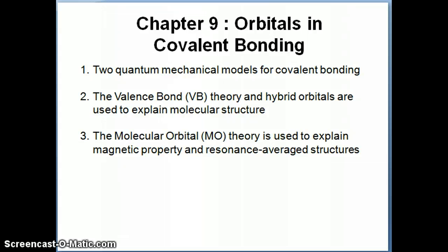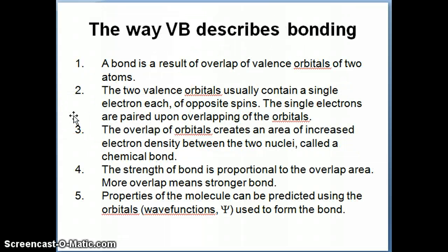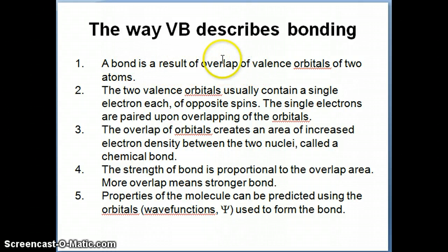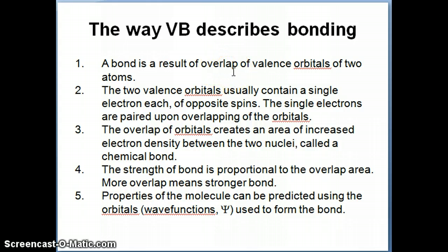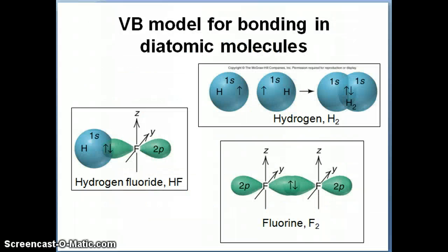So let's go into the valence bond model first and talk about how it envisions bonding — how does it model a chemical bond? The valence bond model views a chemical bond as a result of overlap of valence orbitals of two atoms. By overlap, I mean you have two orbitals — for example, two 1s orbitals — and they overlap with each other, and the area of overlap is then considered the chemical bond.